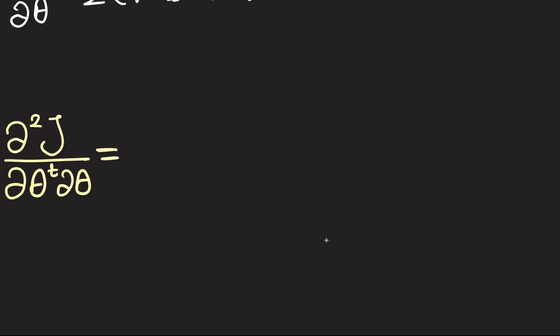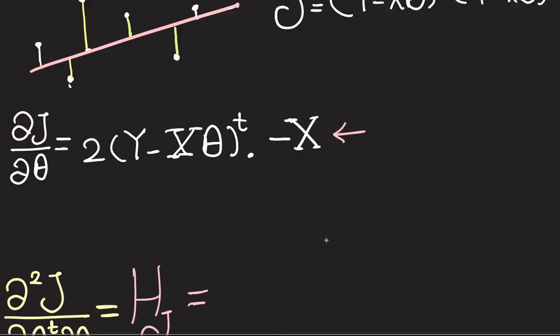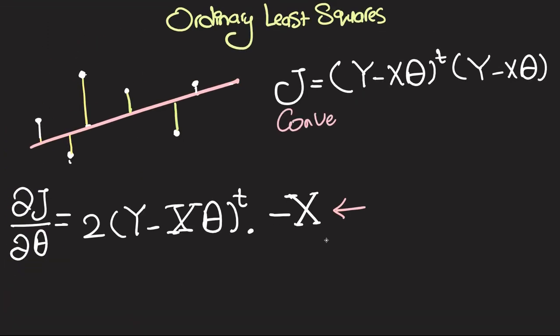Why? Because this is also called the Hessian matrix of J, and using this we can prove that J is a convex function. If the Hessian matrix is positive semi-definite, which means that for any vector Z the product Z^T H Z is always greater than or equal to 0, then J is convex. Being convex means that it's either going to have one global minimum, or have more than one all lying at the same level.